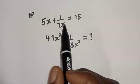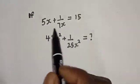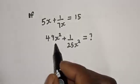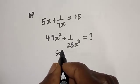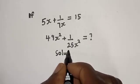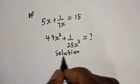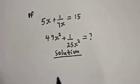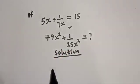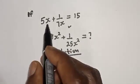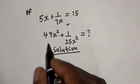But before we proceed, please don't forget to like, share, comment and subscribe. Then, let's work with this. We have 5s plus 1 over 7s is equal to 15.